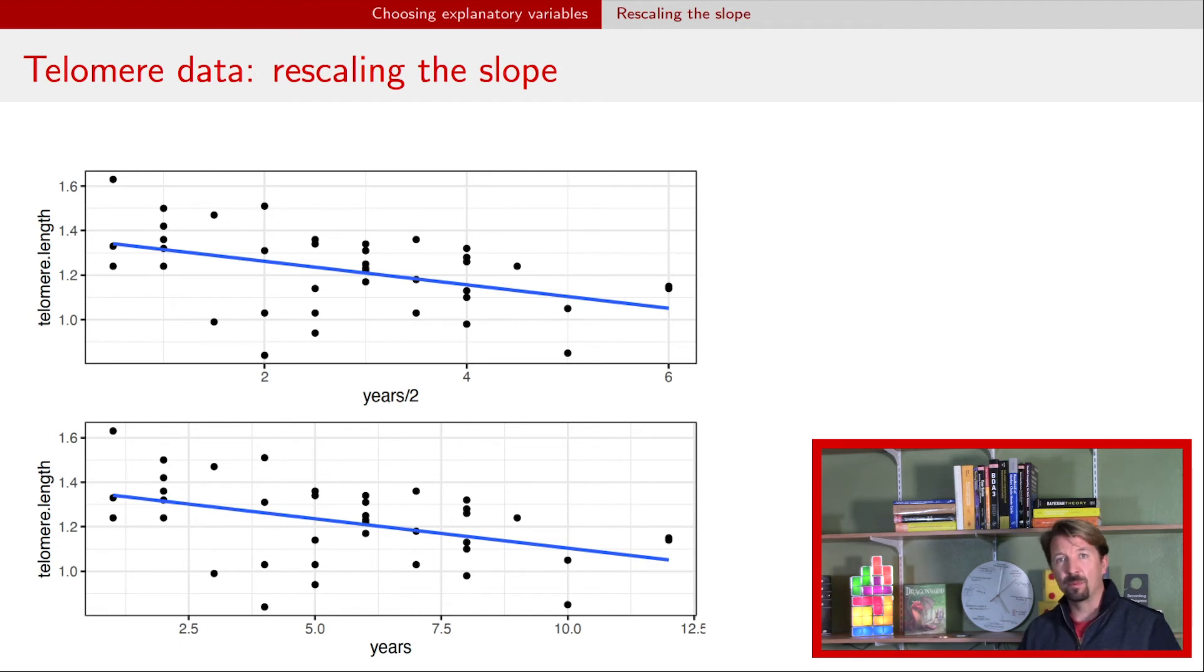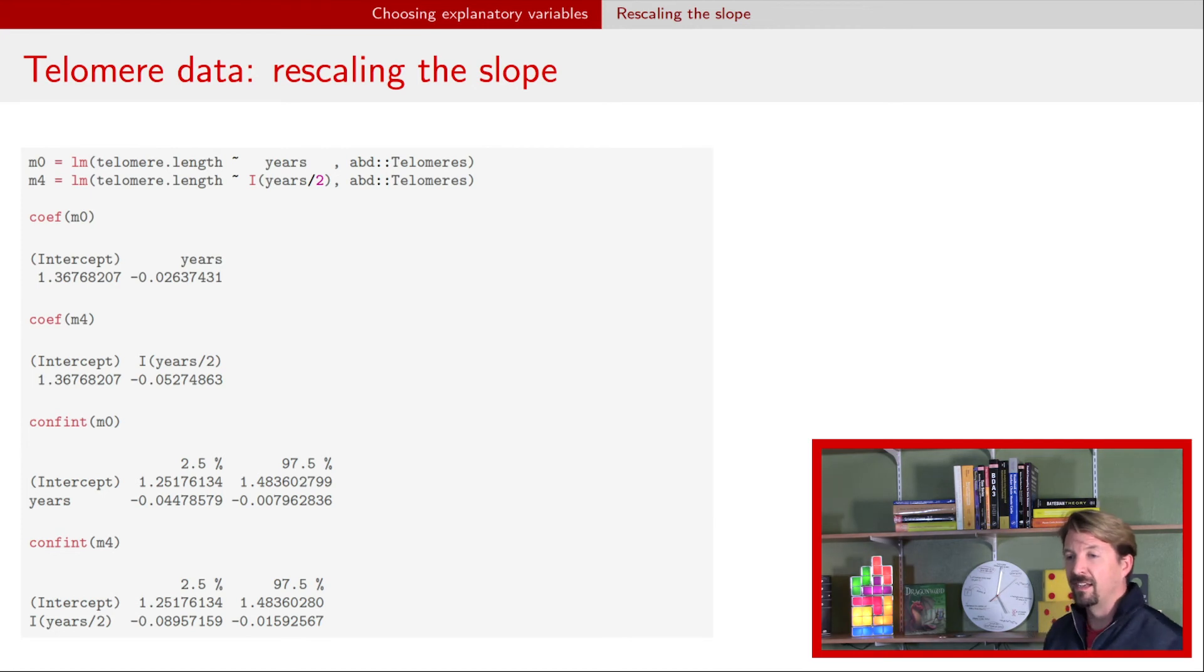Here's applying that example to our telomere data. If we take a look at our telomere data, the bottom plot is our original regression, then the top plot is where we took the years and divided by two. The plots look identical, but the difference between the two is that the x-axis has been scaled. On the top plot, our x-axis goes from zero up to six. In the bottom plot, it goes from zero to 12.5. And what that means is that our slope now has changed by a factor of two. If we run this analysis in R, here's the analysis. And we can see in fact, that that slope in our second regression is double. And so now that is an indication that the interpretation of that new slope that's doubled is what happens when years increases by two, rather than when years increases by one.